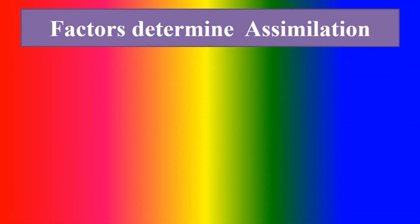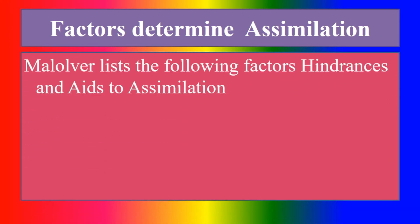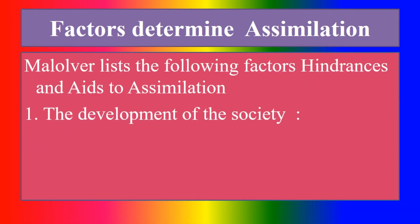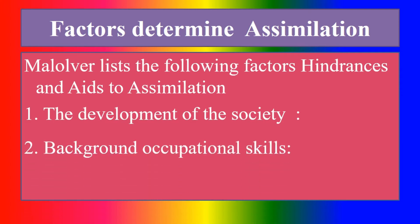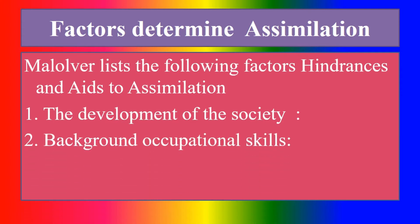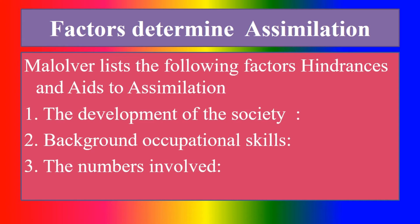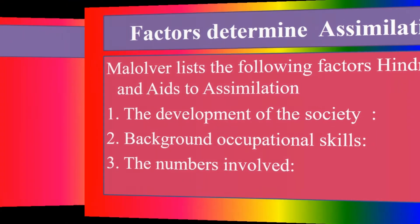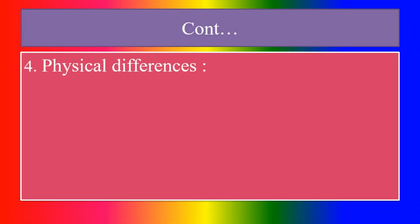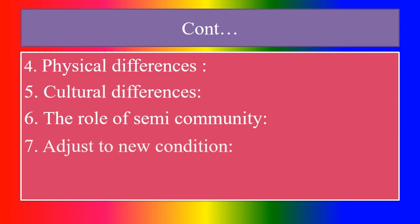The factors that determine assimilation — following factors either hinder or aid assimilation: first, the development of society. Second, background and occupational skills. Third, the numbers involved. Fourth, physical differences. Fifth, cultural differences. Sixth, the role of the semi-community. Seventh, ability to adjust to new conditions.